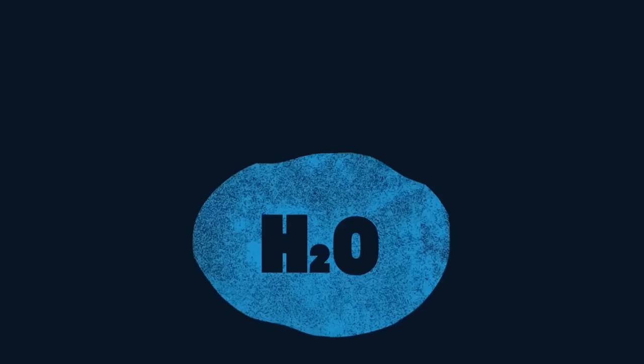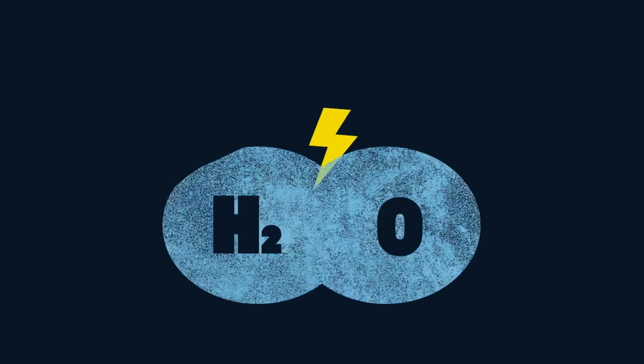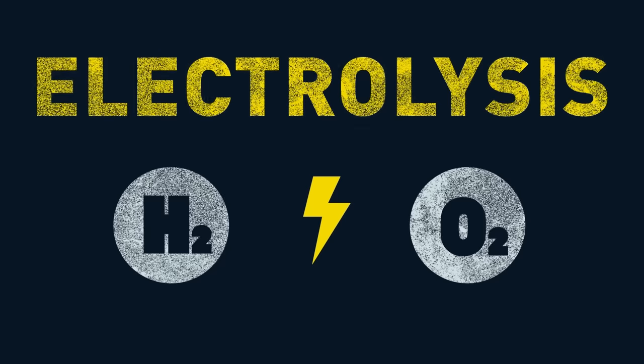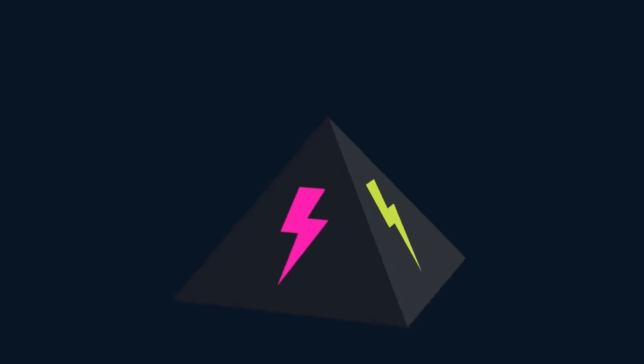It's also possible to produce hydrogen by splitting water with electricity in a process called electrolysis. Here, it depends on the source of the electricity.